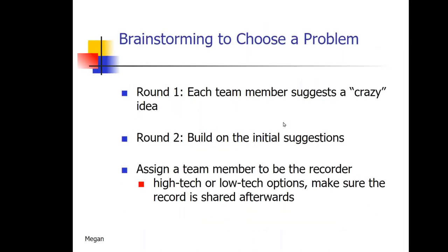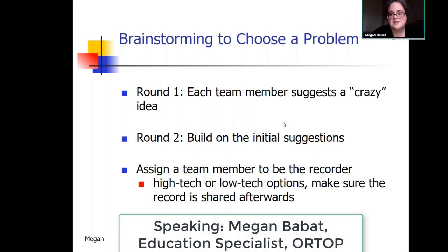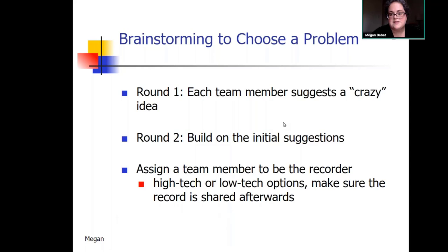Brainstorming to choose a problem: one technique from math class is to ask students to throw out crazy estimates to give a range and take the anxiety off coming up with the right answer. For the first round, have team members just throw out crazy ideas — things everybody knows might be out of reach. For example, when discussing natural disasters and house design, one third grader suggested putting rockets at the base of every house. It's a crazy idea, but coming up with something like that takes the pressure off of finding the perfect idea first time.